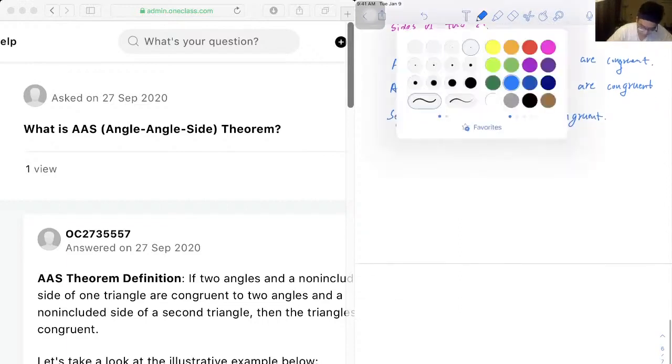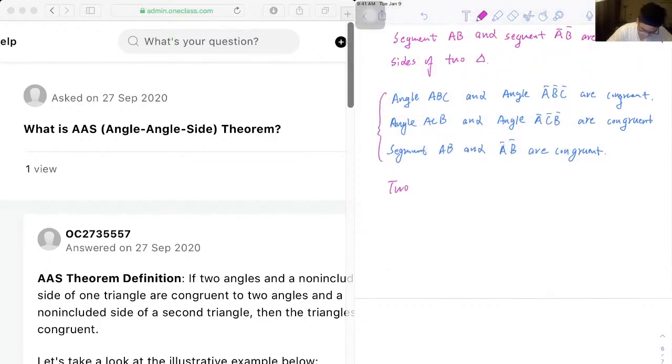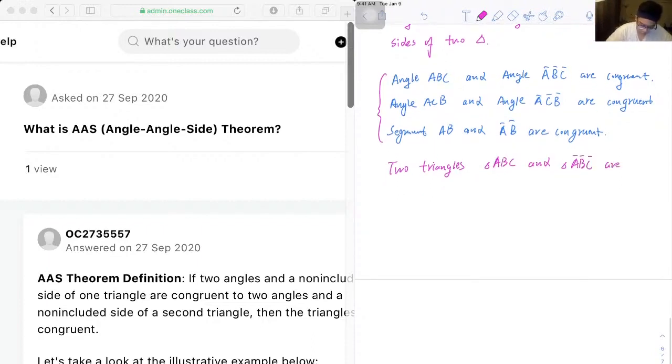So we can have two triangles ABC and A bar B bar C bar are congruent by AAS property or theorem.